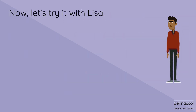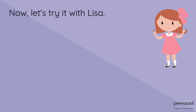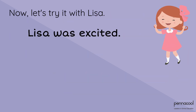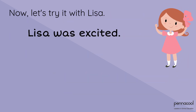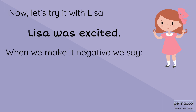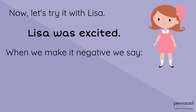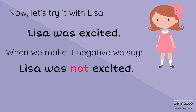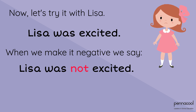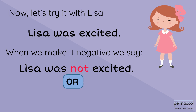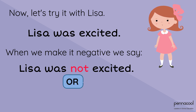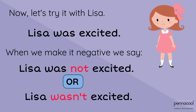Now, let's try it with Lisa. Lisa was excited. When we make it negative, we say: Lisa was not excited. And just like before, we can use a contraction — 'wasn't' — like this: Lisa wasn't excited.